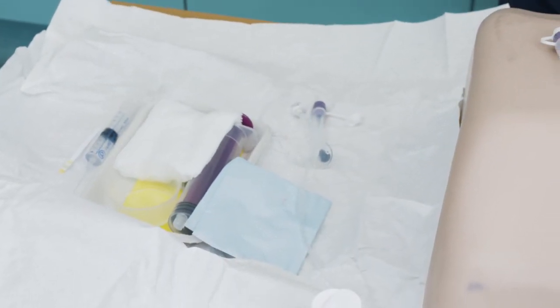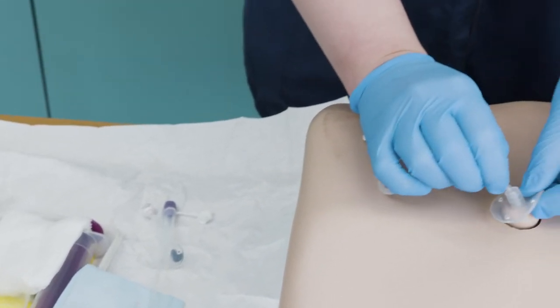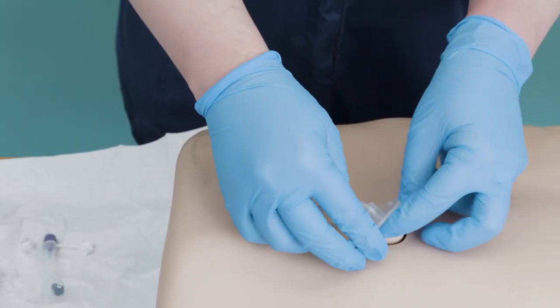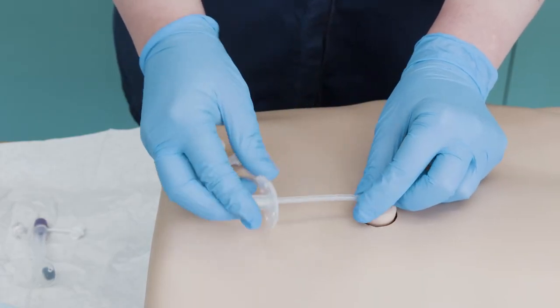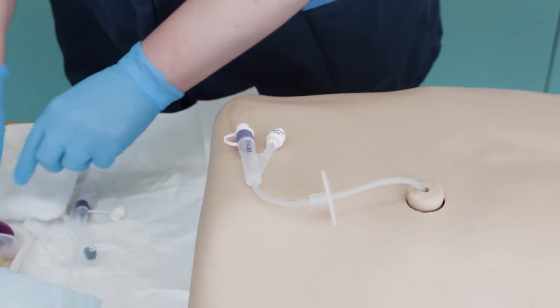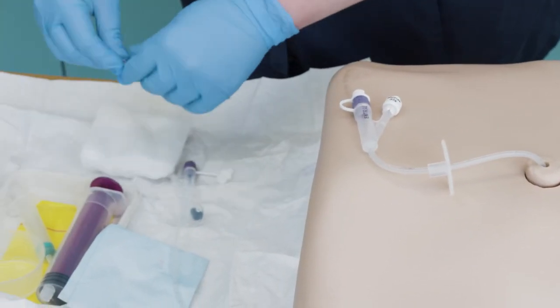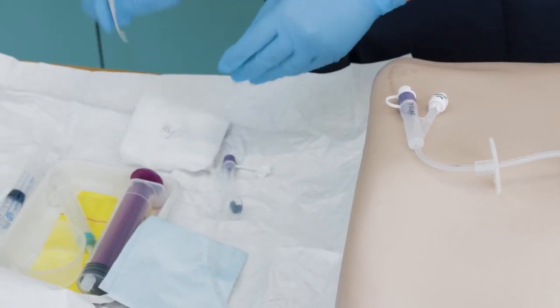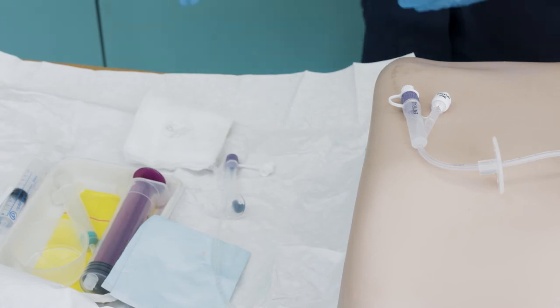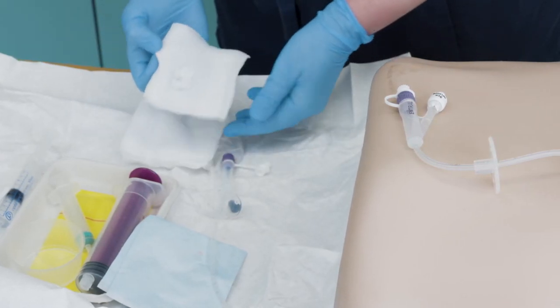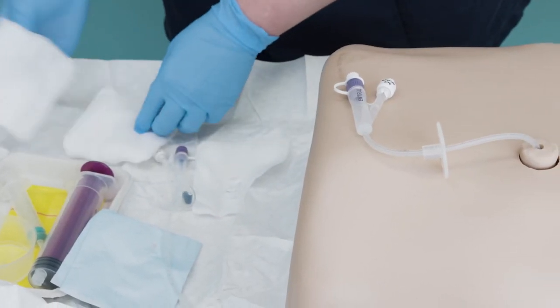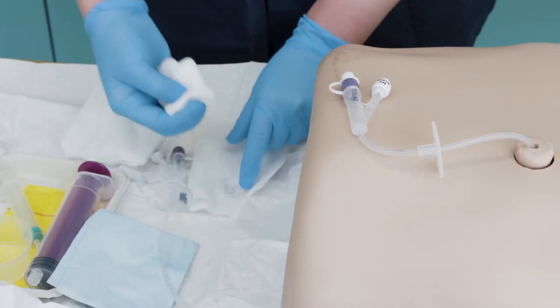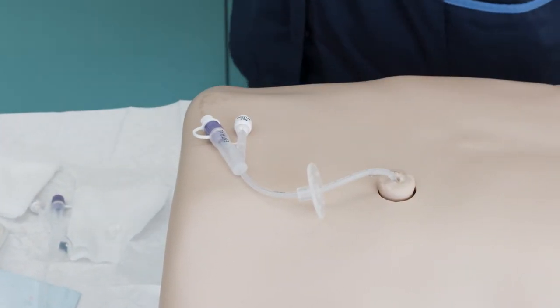Lubricate the stoma site and use the external retention device, and advance the tube in and out of the tract to check it moves freely. Please note this will only be possible when using a balloon gastrostomy tube.